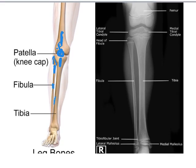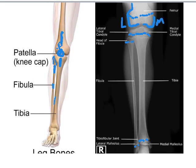On the X-ray, which appears to be from a child or teenager given the visible growth plates at the distal femur, proximal tibia, and proximal fibula, you can see the femoral condyles articulating with the tibial condyles — lateral and medial on both bones. The fibula is distal to the knee joint and does not participate in the knee joint directly, though it has a proximal joint where it connects to the tibia.